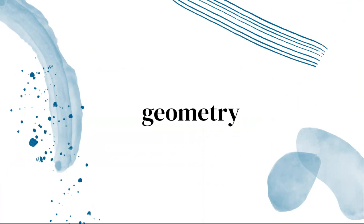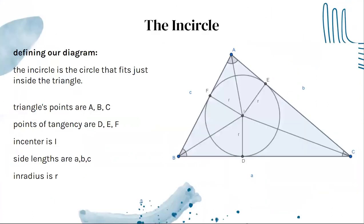Now let's get into the geometry part of this. For this proof, we're going to be using the incircle, which is the circle that fits just inside the triangle. Let's define our diagram. The triangle's points are A, B, and C. The points of tangency are D, E, and F. The incenter is I. The side lengths are A, B, and C. And the inradius is R.